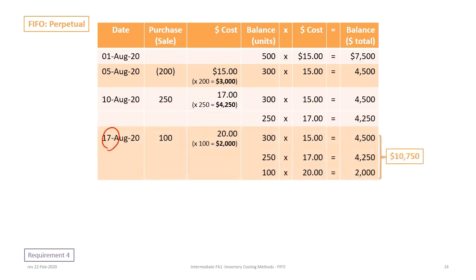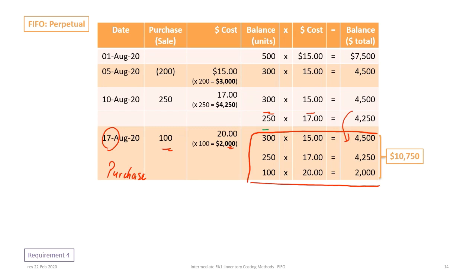Then on August 17th, we have a second purchase: 100 units at $20. What we now have in inventory is 300 units at $15 for $4,500, plus 250 units at $17 for $4,250, plus 100 units at $20 for $2,000. Total inventory at this point is $10,750.